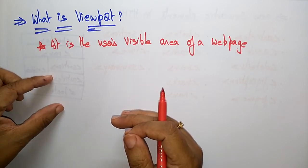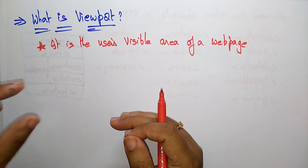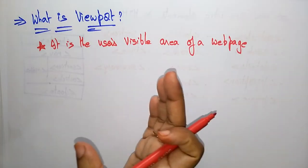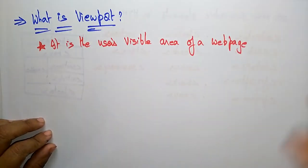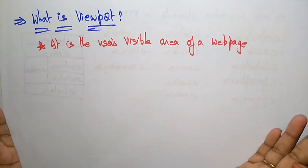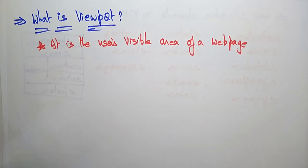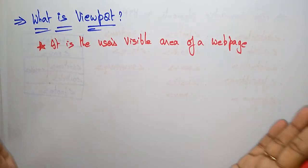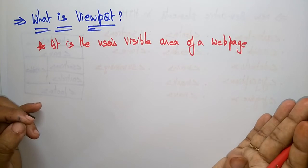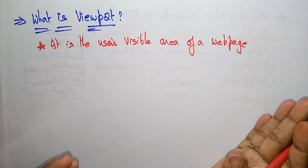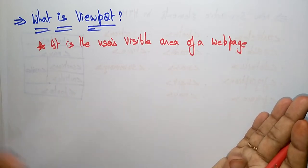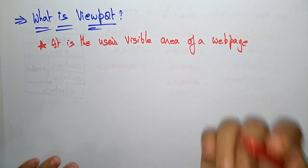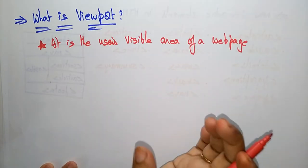Whenever tablets and mobile phones came along, the fixed-size pages that programmers had designed previously were too large to fit the viewport. You had to use scrolling — horizontal and vertical scroll buttons — to view the page. The content also appeared congested and not clearly visible. To fix this, browsers on those devices would scale down the entire web page to fit the screen. To solve that problem, we use the viewport, and you need to write a meta tag for viewport in your code.